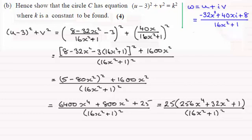So that means that what we've got here is it's equal to 25 times (16x² + 1)² all over (16x² + 1)². So these two factors cancel out leaving us then with 25.